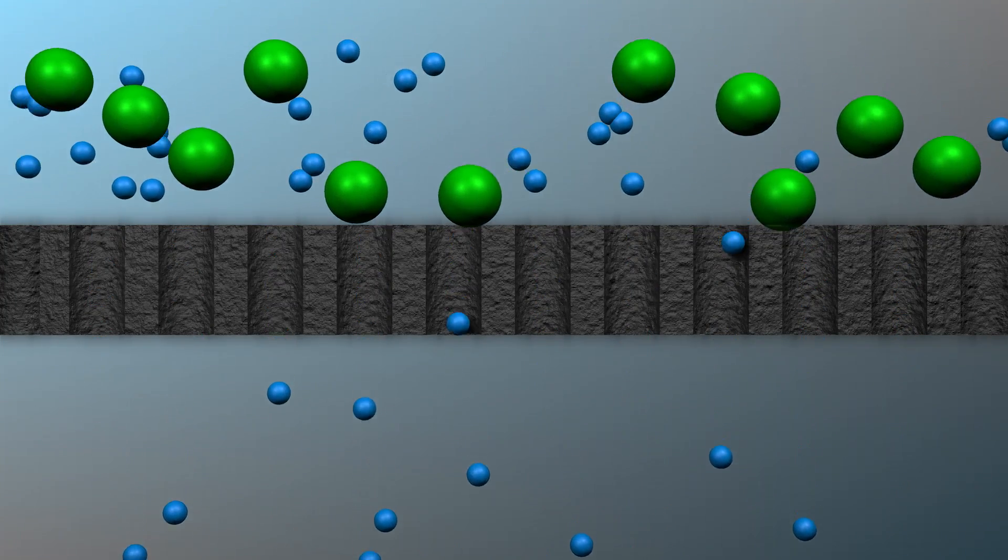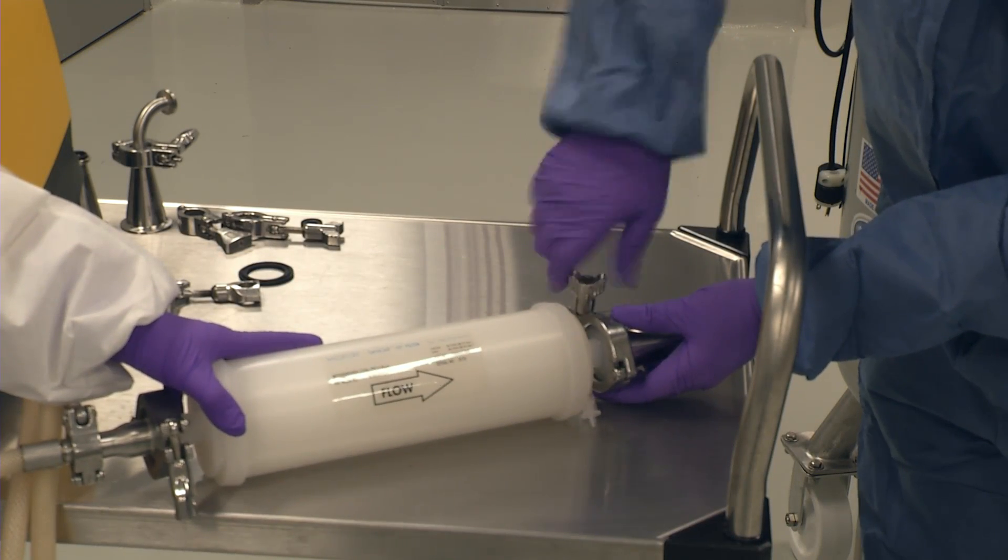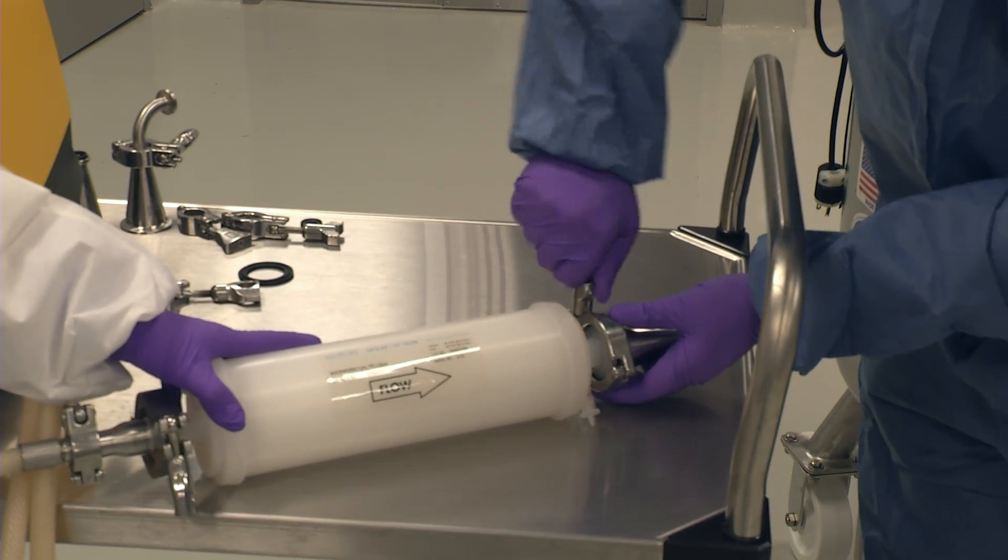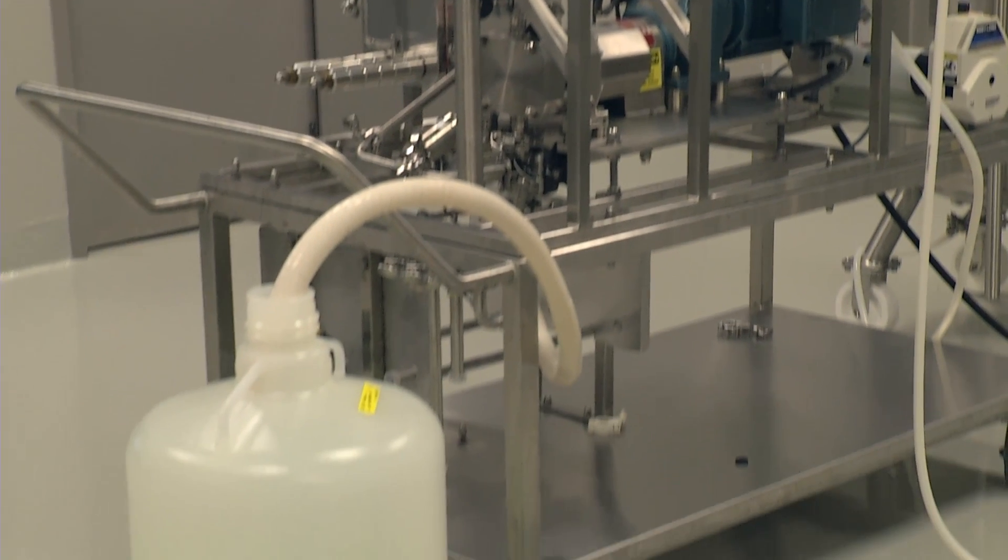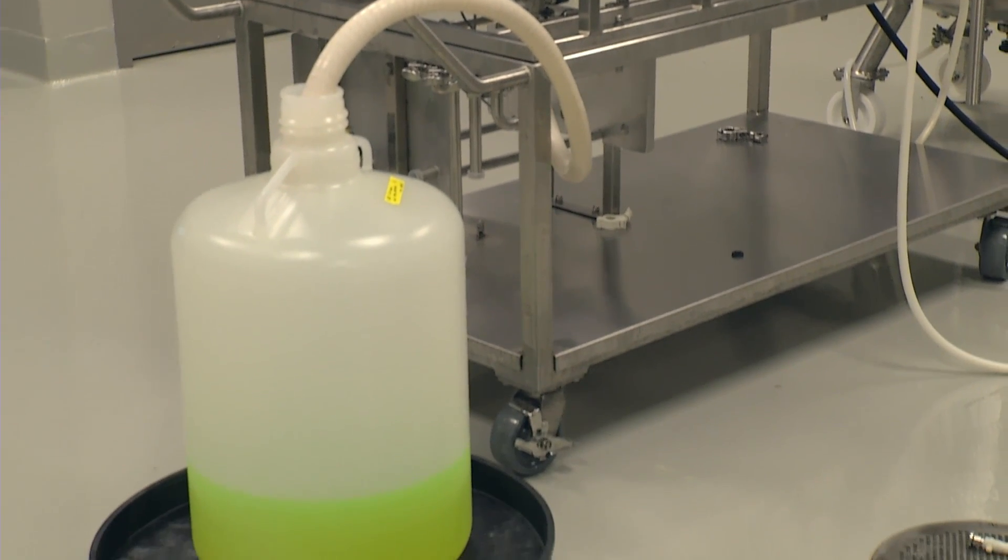When this process is complete, the GFP solution is routed through a 0.22 micron final filter and then collected in appropriate containers, usually bottles or bags. The purification process is complete.